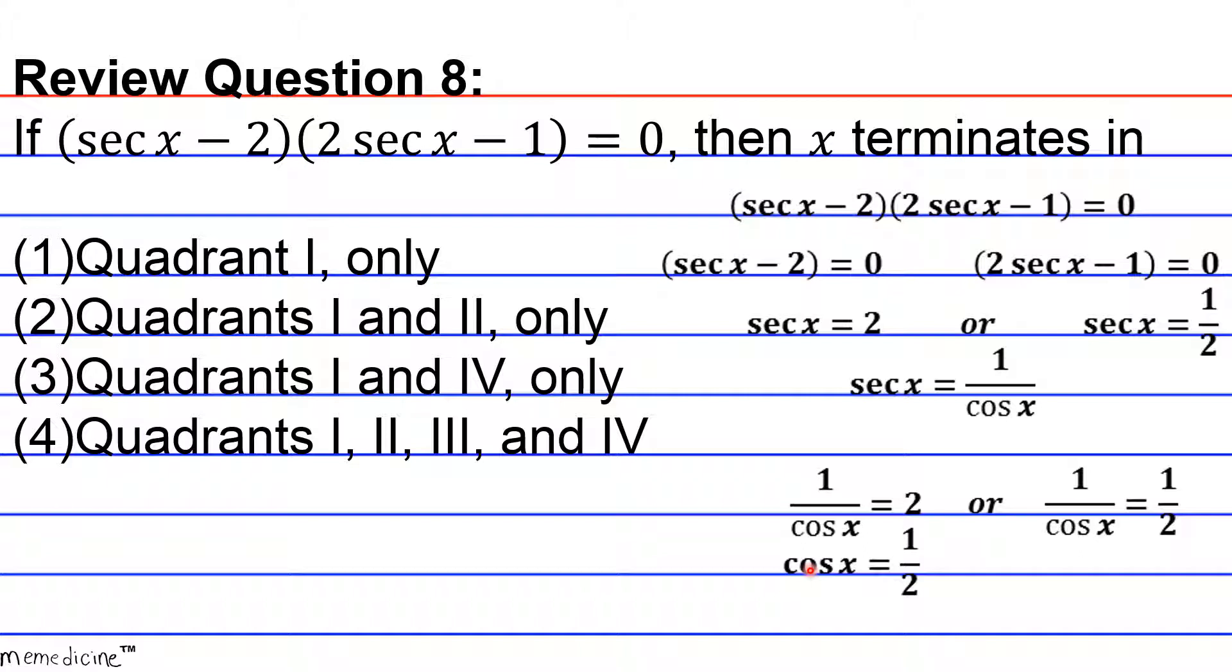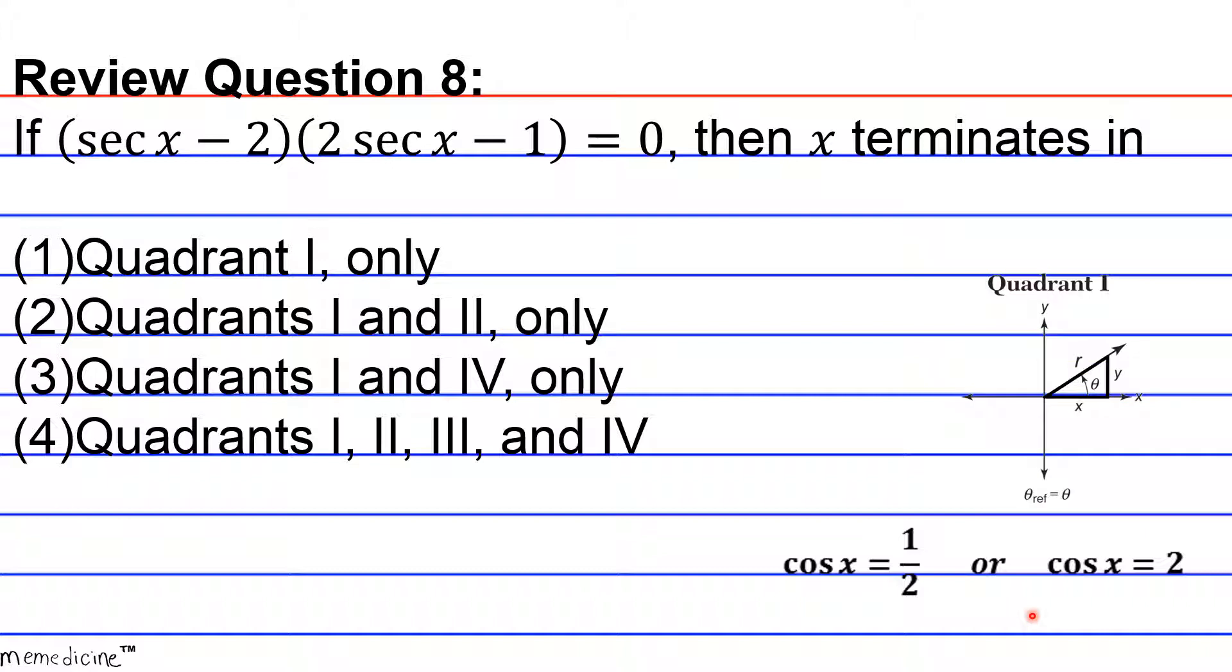Okay, so when we flip or take the reciprocal of this expression, we get that the cosine of x is equivalent to one half. Or when we flip this expression, we get that the cosine of x is equivalent to 2. Now notice that both of the answers are positive. And the cosine of x can only be positive in quadrants 1 or quadrants 4, because you have to remember that the cosine is the expression of the x coordinate divided by the ray that intersects with the origin to form the angle theta.